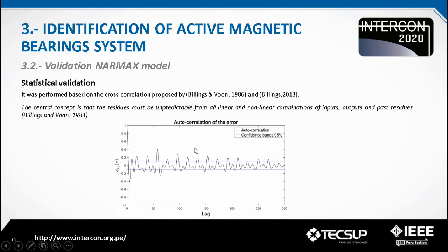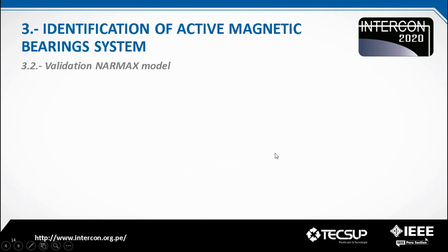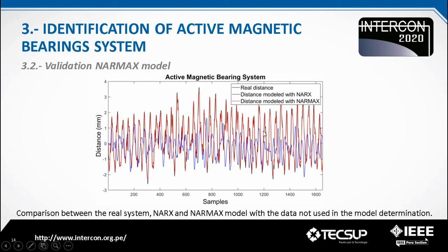Although the autocorrelation initially goes outside the confidence band, it then stays inside. To ensure adequate performance, a test was done with data not used for identification, to verify if it is a predictive model. The same test was also performed on the initial NARX model. This is shown in the image, where it can be seen that the NARMAX model (red) follows the reference, while the NARX model (blue) does not. The real distance data is shown in black.